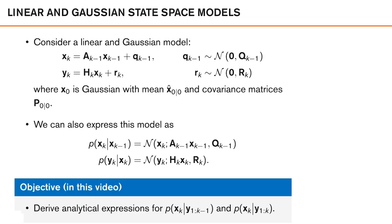Before we start, we need to define some prerequisites and some notation. We assume that we have a linear and Gaussian model, so the state at the current time is equal to the state at the previous time instance times the transition matrix A. To account for added uncertainty in the predicted state, we also have this additive noise process Q, which is assumed to be Gaussian with zero mean and covariance Q. The observation Y is similarly described as a linear function of the state X multiplied by the measurement model matrix H, and again we have this additive noise process R, which is assumed to be Gaussian with zero mean and covariance R.